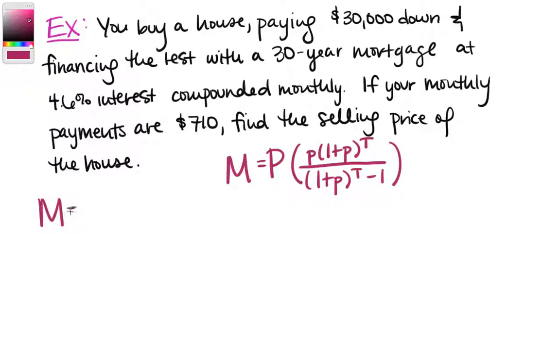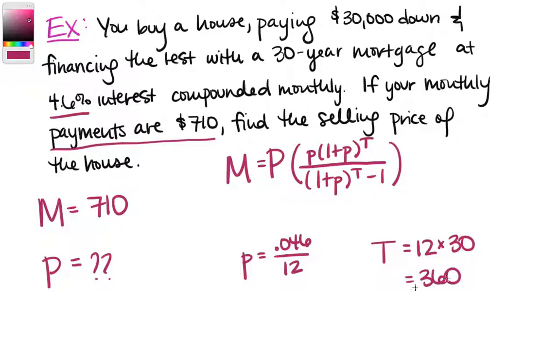So we've got M, P, little p, and t. We know M. We're told that the monthly payments are $710. What about the principal? We're not given how much we borrow or the selling price of the house. That's what we're going to want to find. Periodic interest rate, 4.6%, we write as .046 over 12. And you should note, if you plug this into the calculator, it's not going to be a nice, easy decimal. And you never want to round until the very end of the problem. So you're going to want to keep this as a fraction as long as you can. And t, 12 monthly payments per year times the 30 year mortgage gives us a t of 360.